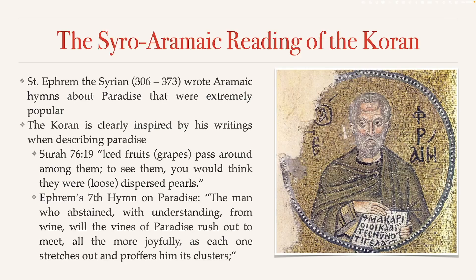These grapes move around and offer themselves up to the believers in paradise — an image also seen in one of Ephraim's hymns on paradise, where it says: 'The man who abstained with understanding from wine, will the vines of paradise rush out to meet all the more joyfully, as each one stretches out and proffers him its clusters.' This is the same image of grapes offering themselves up to the believers.